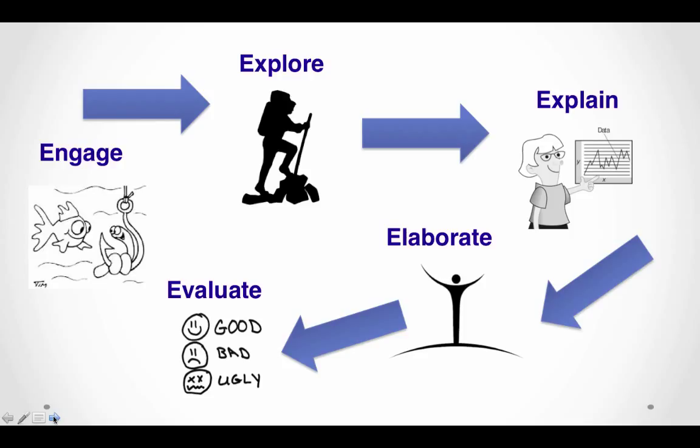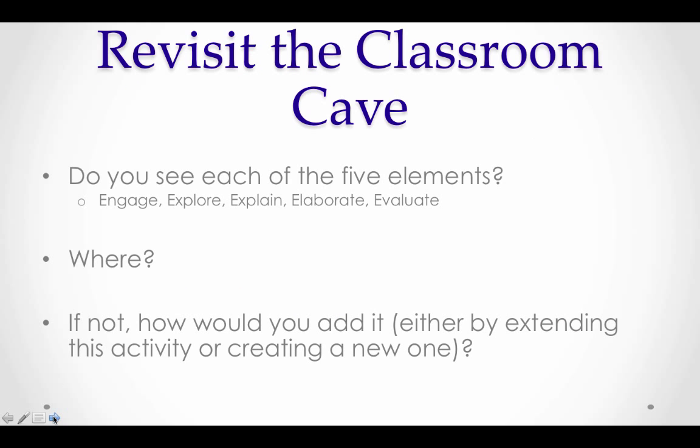This may happen across an entire unit. You'll also notice that while it generally moves from Engage through Explore, Explain, Elaborate, all the way to Evaluate, you might be evaluating after the Explore stage as well as after the Explain stage. You may explore and explain, then go back and explore and explain something else before you get to Elaborate. So while it's a general cycle moving in one direction, we hold some space for being iterative within this process.